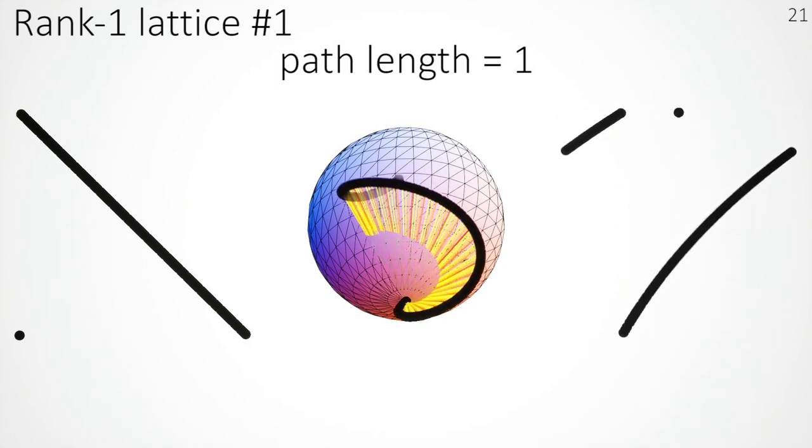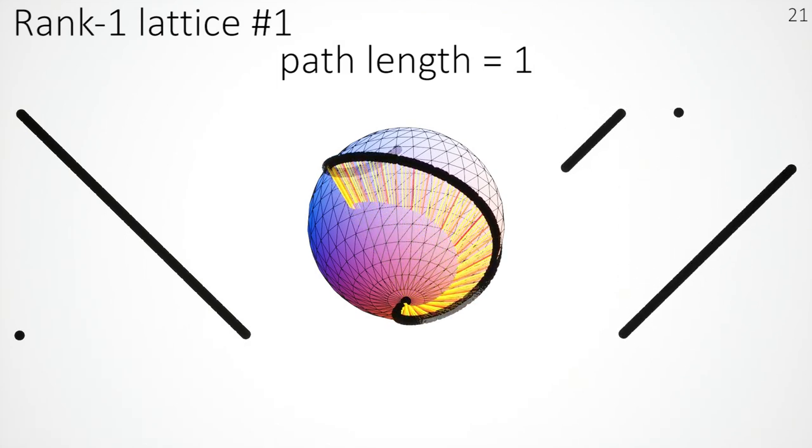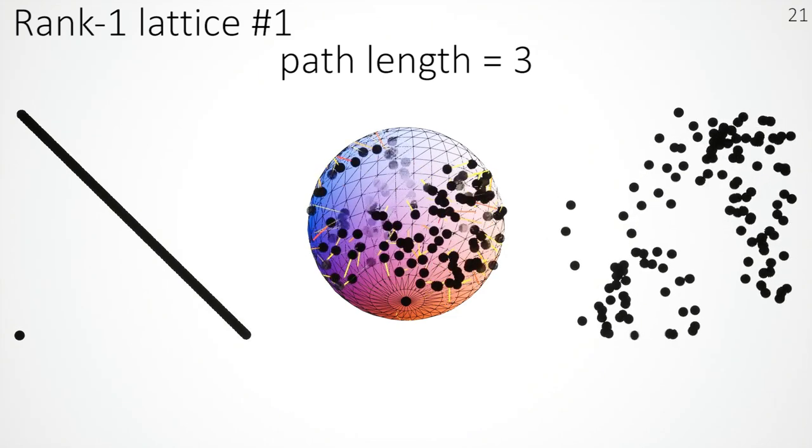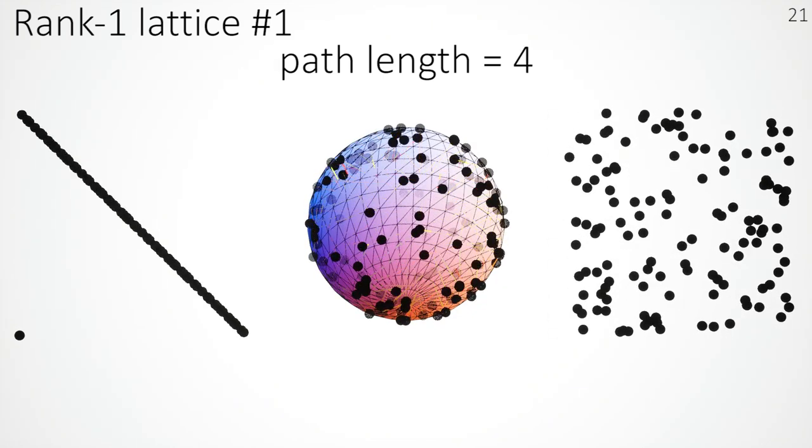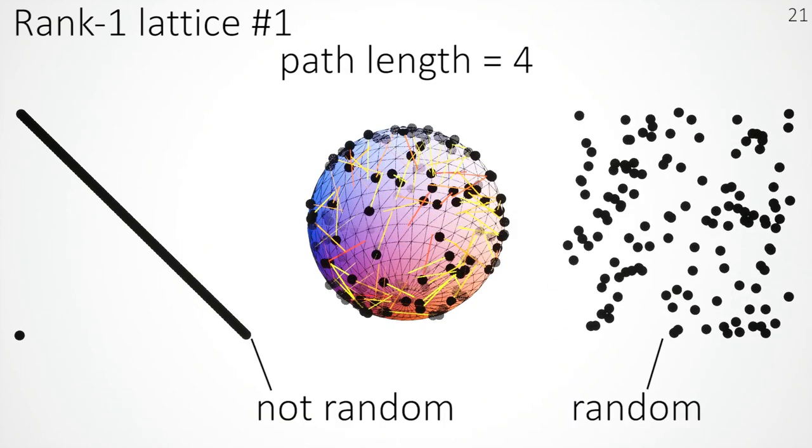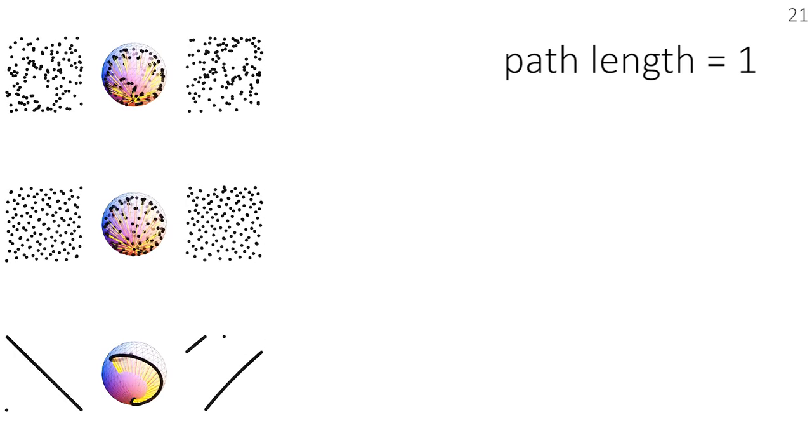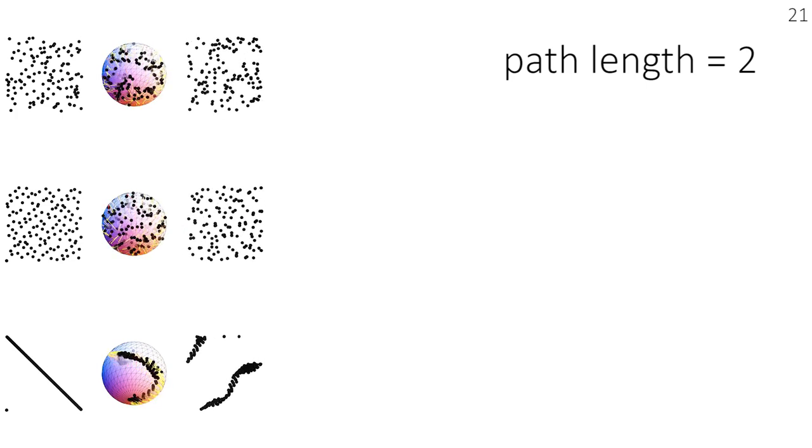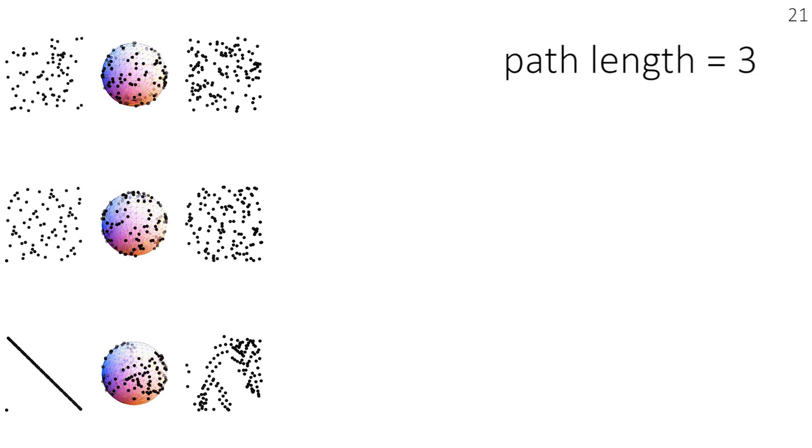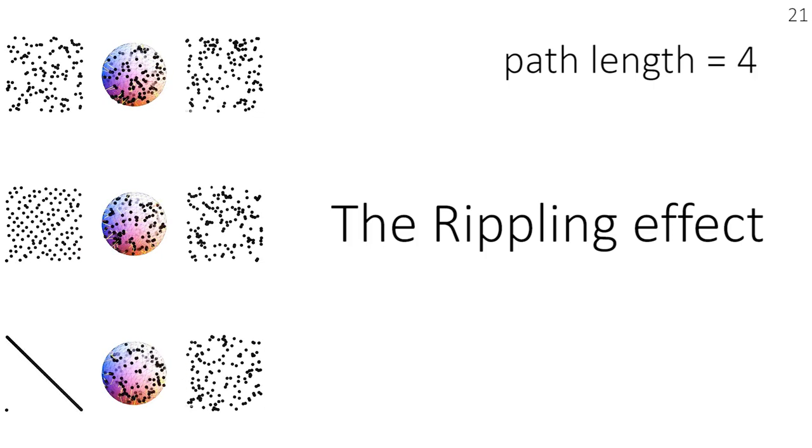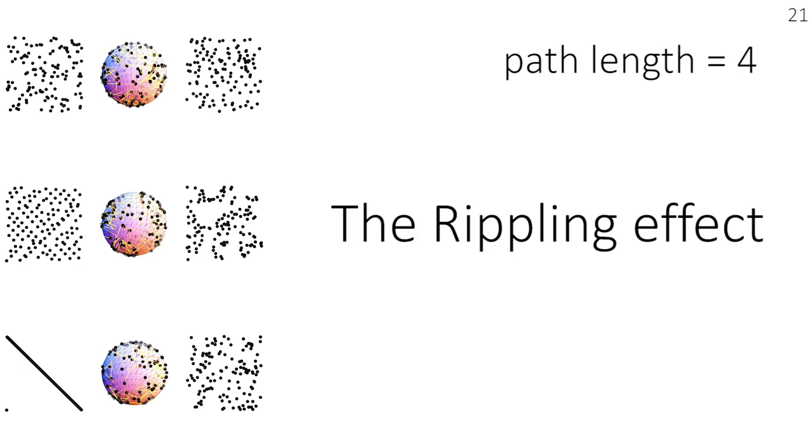Let's look at another sequence. This time, we use the rank 1 lattice. We deliberately selected rank 1 lattice with obvious defects. Its 2D projections show strong linear patterns, and they do not even look random at all. We continue to trace the path vertices and surprisingly find even if we use linearly correlated sequence points as input, the vertices of the path quickly degenerated into random vertices as well. Let's look at all these three examples together. The difference between them mostly landed at path length 1. The subsequent vertices showed strong decorrelation with the input sampling pattern. This is the rippling effect in path tracing. No matter what the input sequence is, the output path vertices will finally degenerate to random. Can we make the most use out of this?